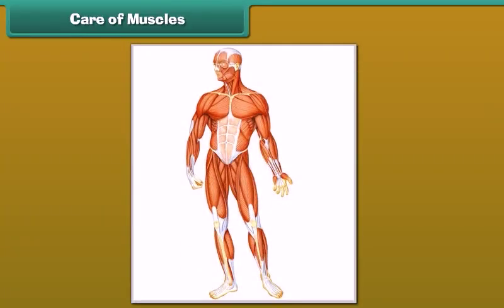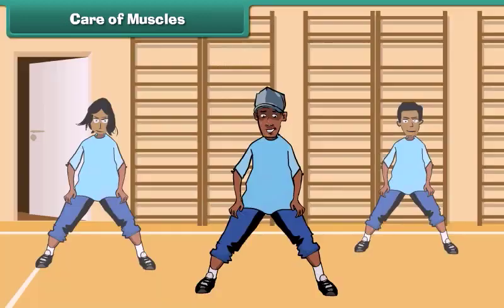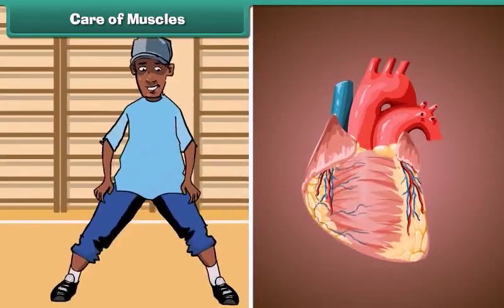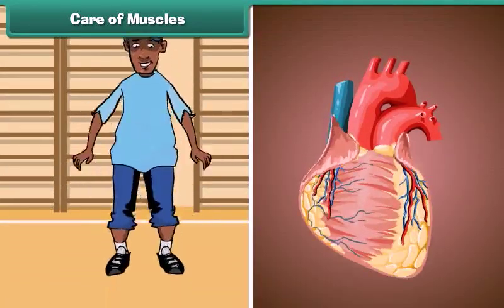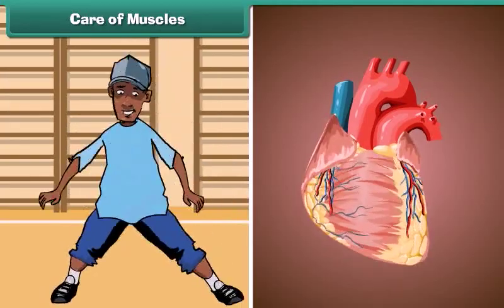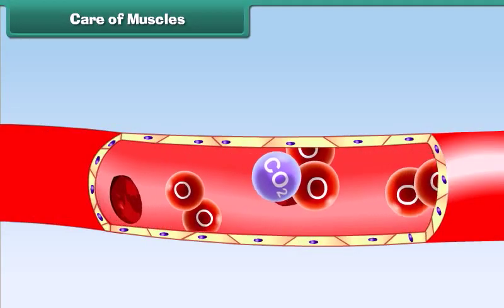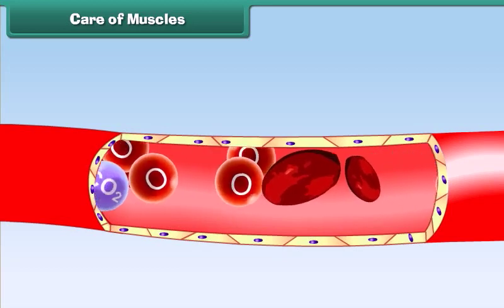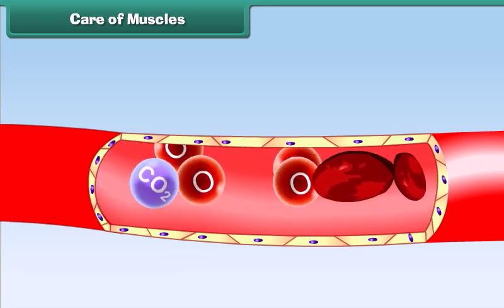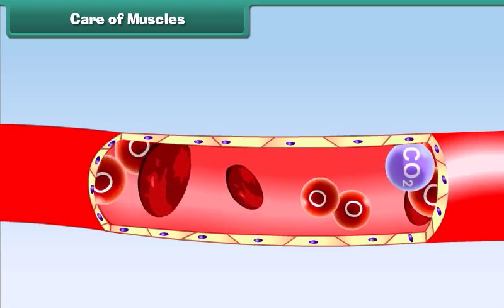For good health, it is important that our muscles are strong and functioning efficiently. Regular exercise makes our muscles strong. The rate of the heart's action increases during exercise and we breathe faster. As a result, plenty of oxygen and nutrients in the blood are supplied to all parts of the body, which makes us feel refreshed and lively.